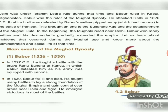Now, the main events of the Mughal dynasty. First, Babar, from 1526 to 1530: In 1526, he fought a battle with the brave Rana Sangha at Kanwa, in which Babar defeated him — his army was equipped with cannons. In 1530, Babar fell ill and died. He fought many battles to lay a strong foundation of the Mughal empire and gain control over areas near Delhi and Agra, and emerged victorious in most of them.